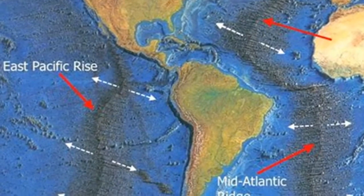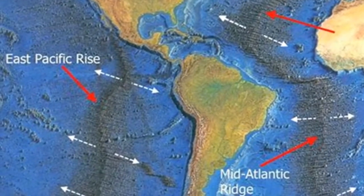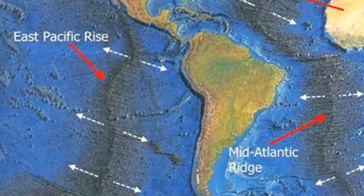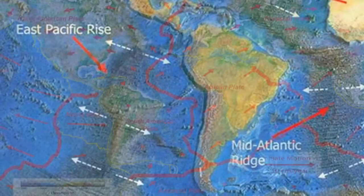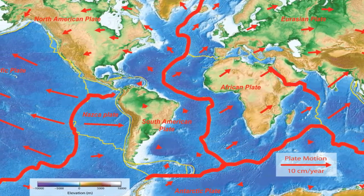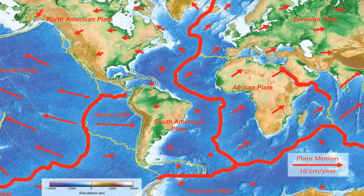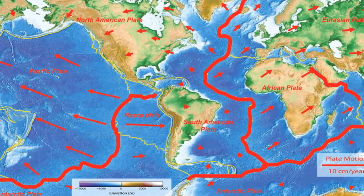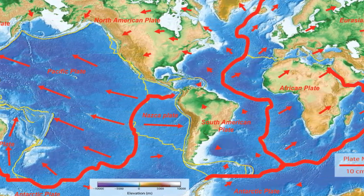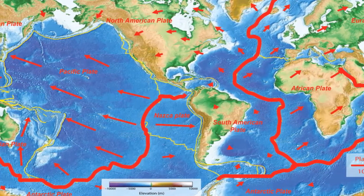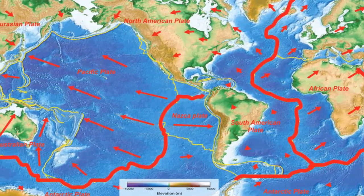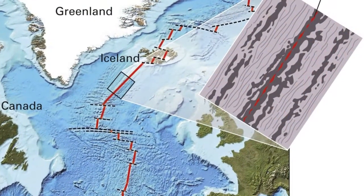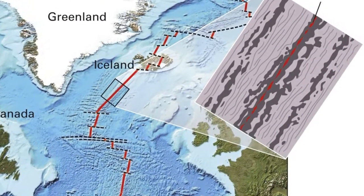The term ridge may be misleading because these features are not narrow and steep, as that term implies, but have widths from 1,000 to 4,000 kilometers, and the appearance of a broad, elongated swell that exhibits various degrees of ruggedness. Furthermore, the ridge system is broken into segments that range from a few tens to hundreds of kilometers in length. Although each segment is offset from the adjacent segment, they are generally connected, one to the next, by a transform fault.